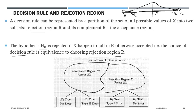Type II error, or false acceptance (false negative), occurs when H0 is false — meaning H1 is true — but the data falls in the acceptance region and we accept H0. Both hypotheses are alternatives to each other: if H0 is false, H1 is true. The probability of Type II error is P(X not in R | H1 true), where we fail to reject H0 even though the data came from H1.